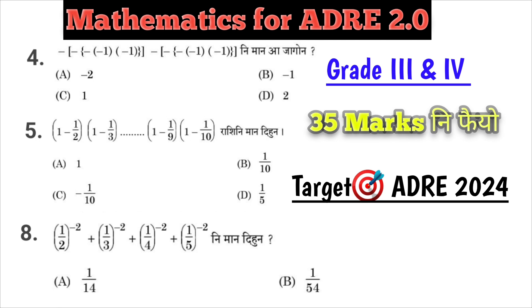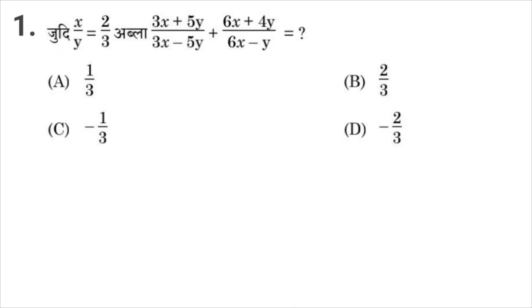Thank you so much. Let's see. X by Y equals 2 by 3. Then 3X plus 5Y by 3X minus 5Y, plus 6X plus 4Y by 6X minus Y.